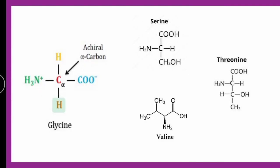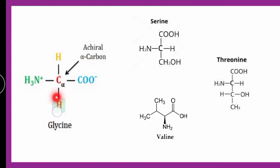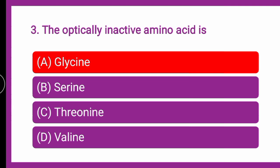Serine, threonine, and valine each have a chiral carbon — all four substituents are different. But in the case of glycine, two substituents are the same, so it is an achiral carbon. Therefore, the correct answer is glycine — glycine is the optically inactive amino acid among the given options. All others are optically active.